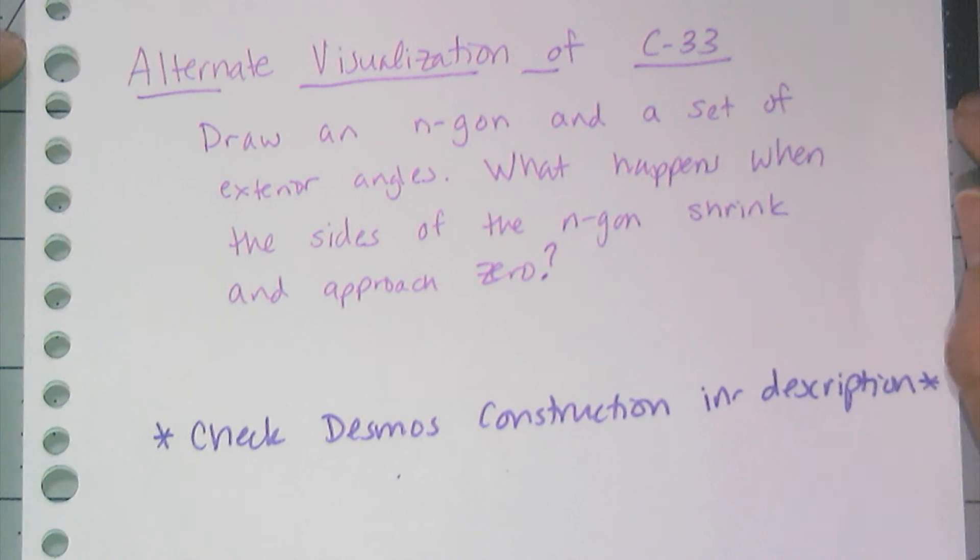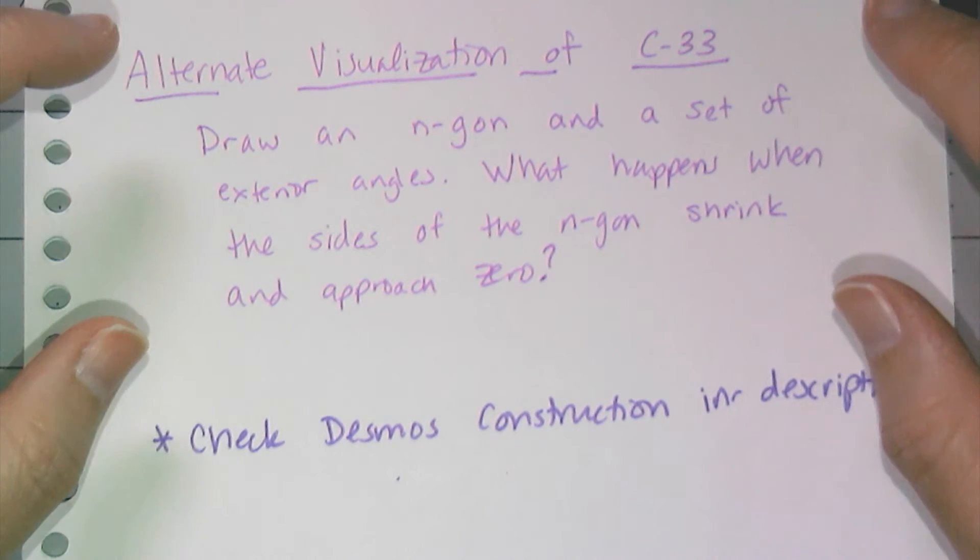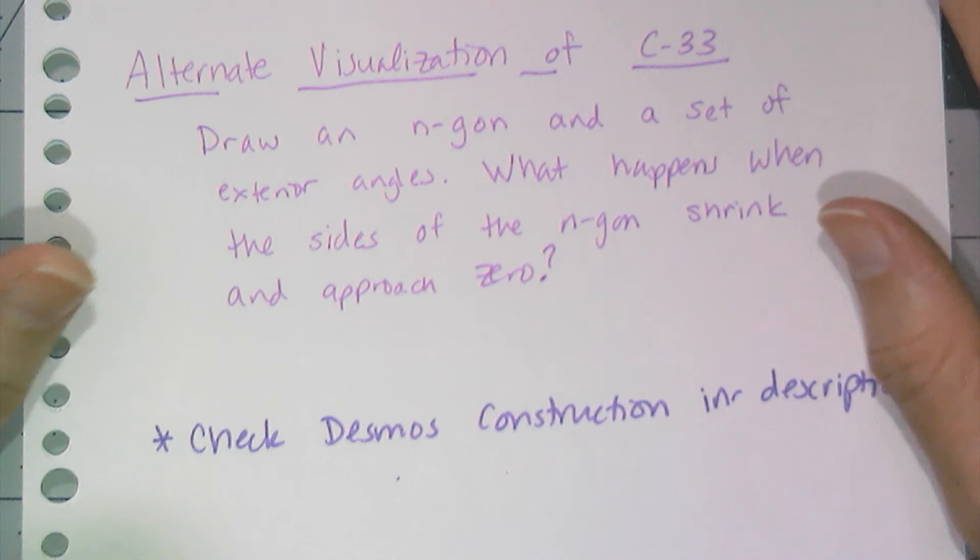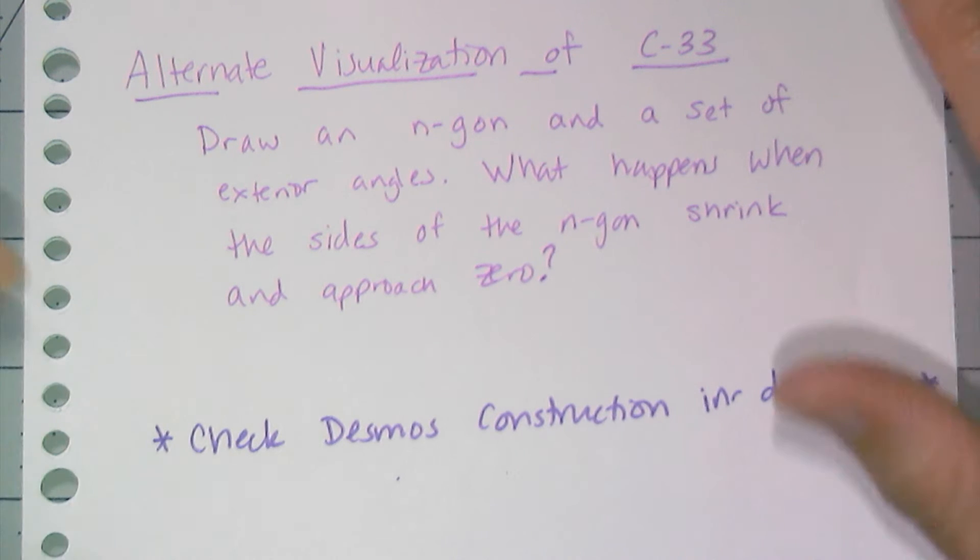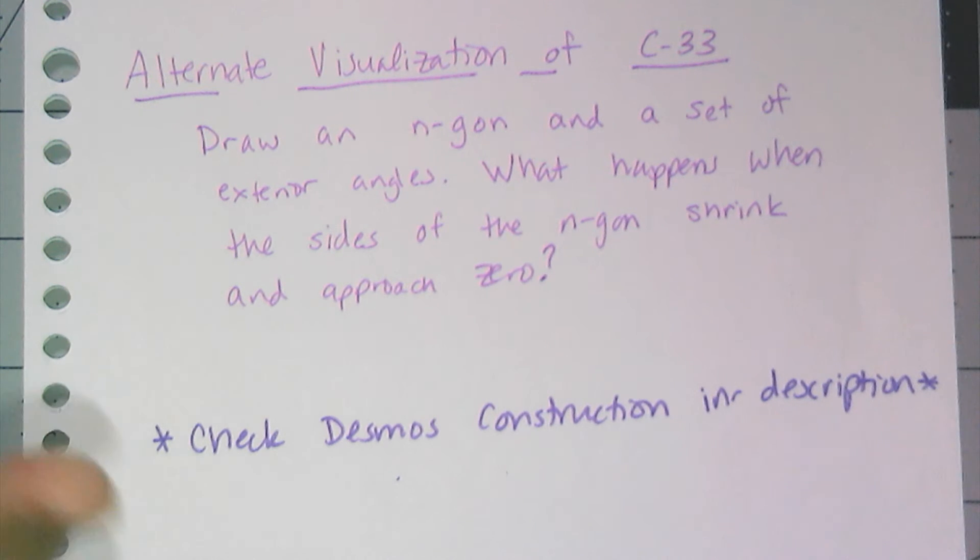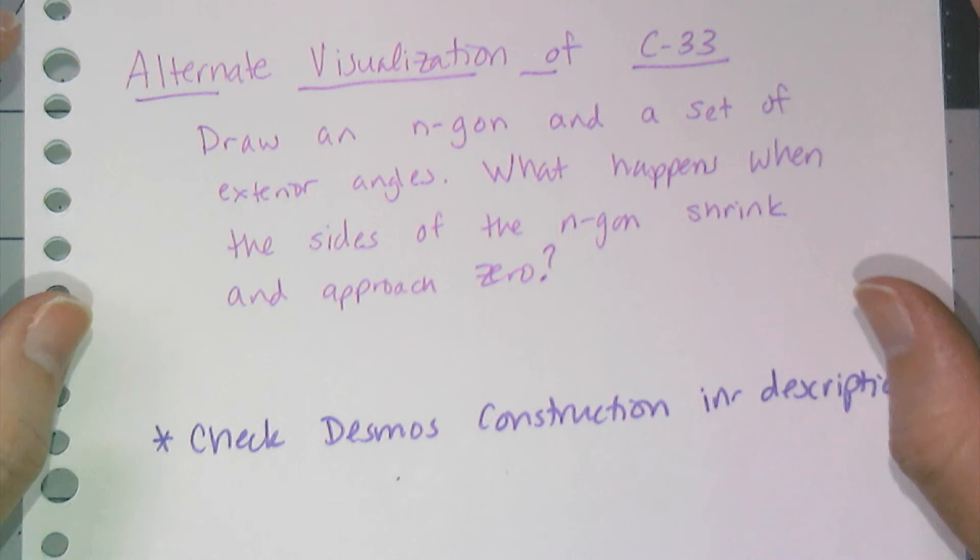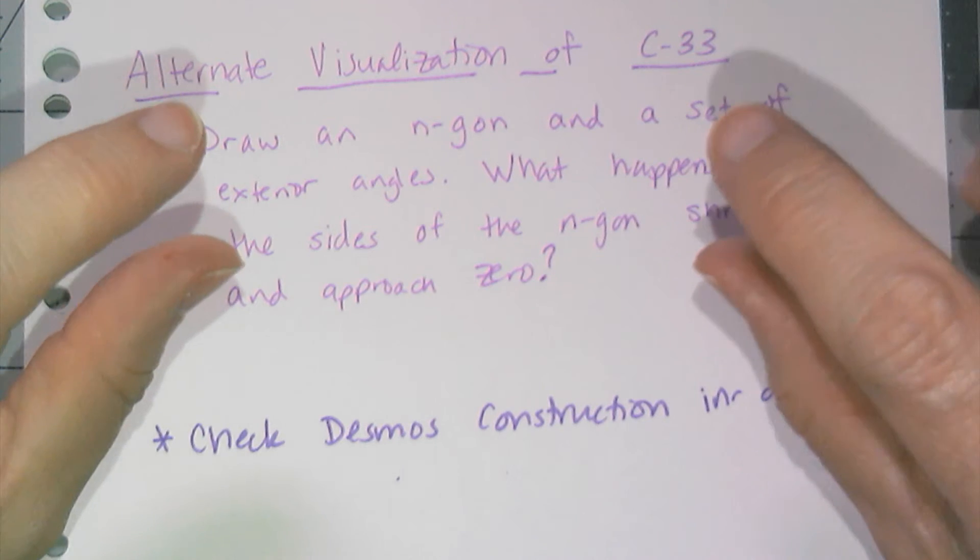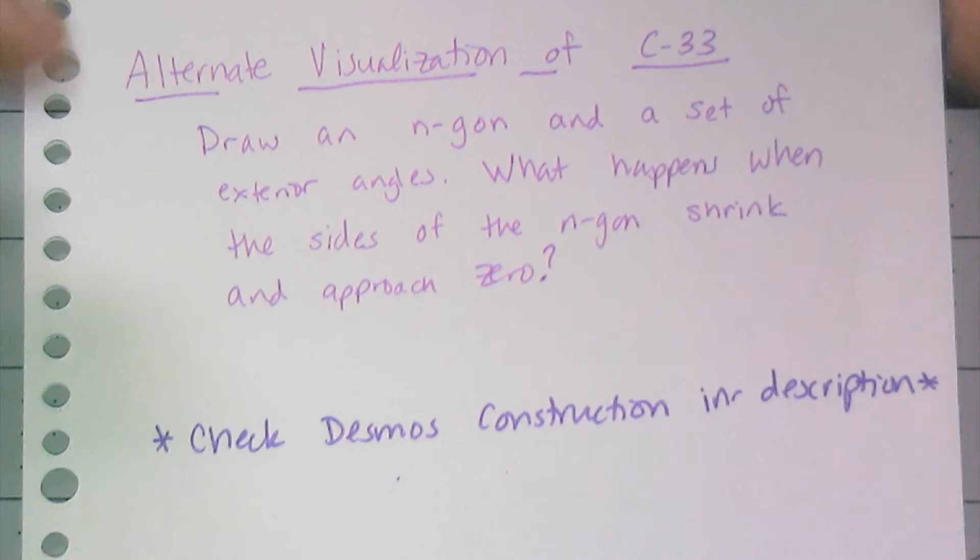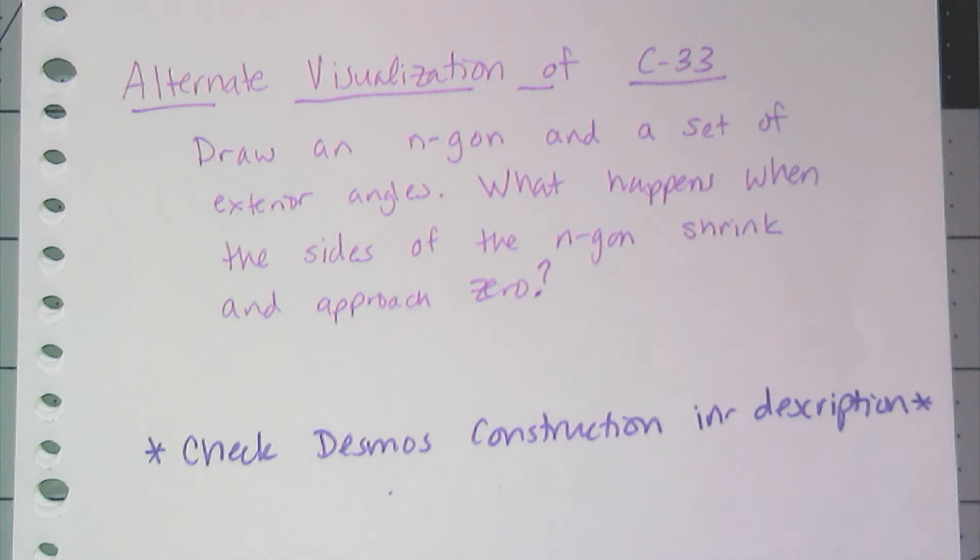So, there's actually a really cool way of visualizing this. And we're going to just have you do it as a thought experiment. And you can check to see if you imagined it correctly by checking a Desmos construction I created that I'll link in the description. In your mind, draw an N-gon and a set of exterior angles. And I want you to think about what happens when the sides of that N-gon shrink and approach zero. And what would that picture look like? And if you can visualize that, it's another way for us to derive that exterior angle sum conjecture.